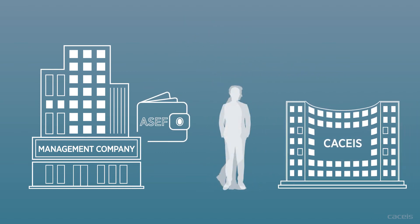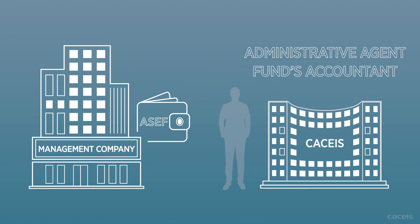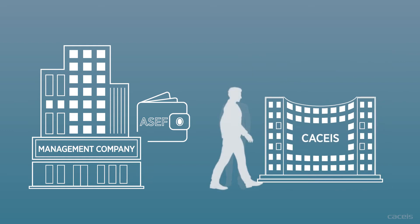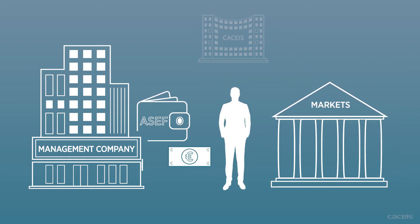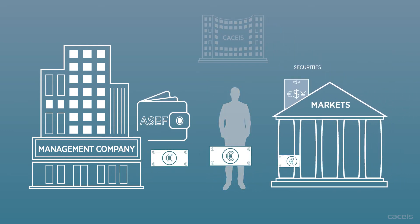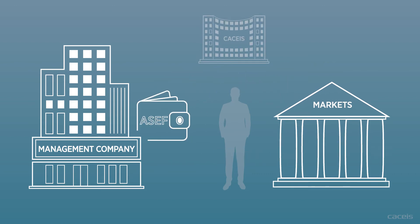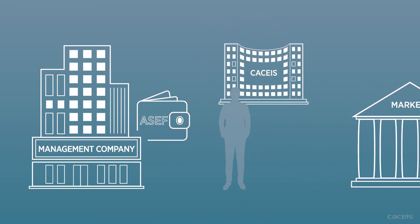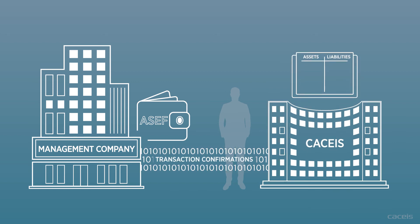Casius, as the administrative agent appointed by Company Eeks, manages the fund's accounts. Company Eeks uses the money invested by John to buy securities on the financial markets. It then sends the confirmations of the transactions executed on the financial markets to Casius, who enters them in the accounting records.